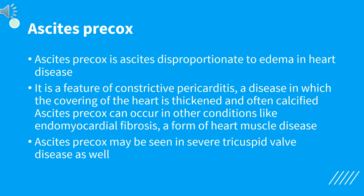Ascites disproportionate to edema in heart disease is a feature of constrictive pericarditis, a disease in which the covering of the heart is thickened and often calcified. Ascites pericox can occur in other conditions like endomyocardial fibrosis, which is a form of heart muscle disease. Ascites pericox may also be seen in severe tricuspid valve disease.